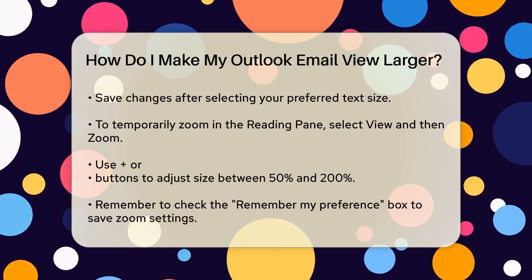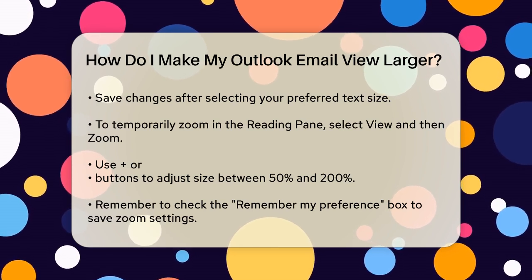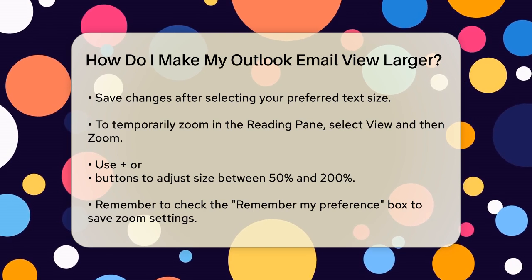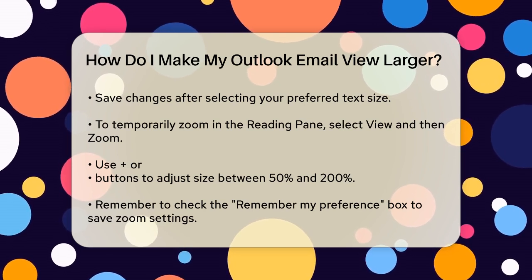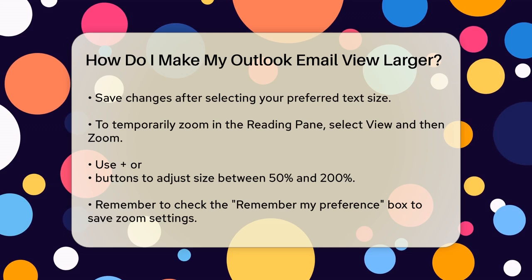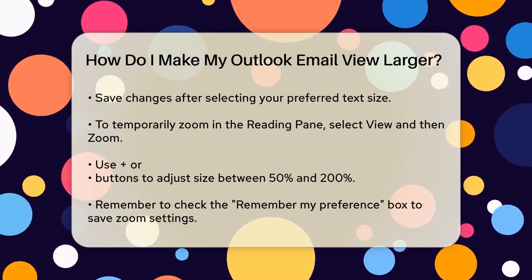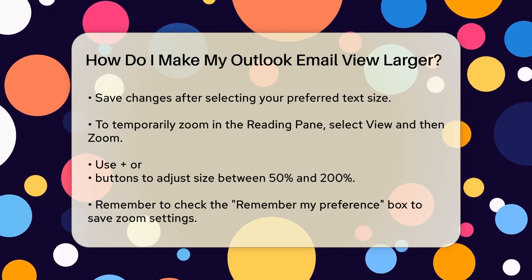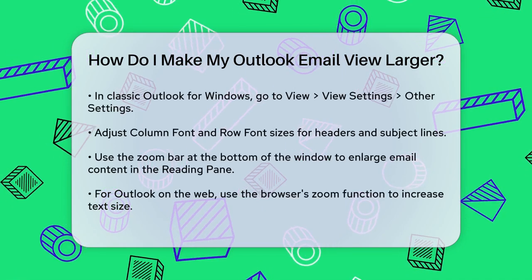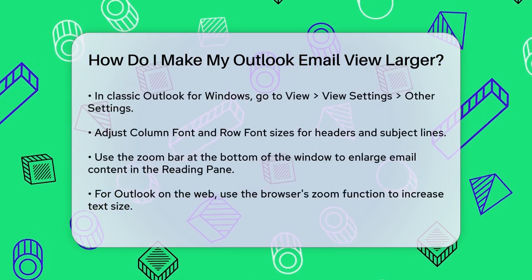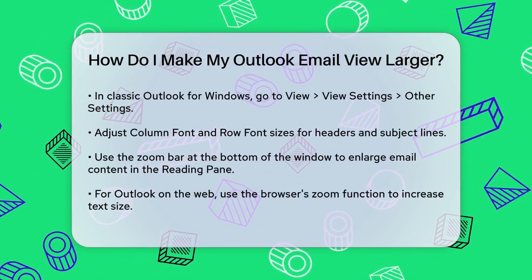If you're using the classic Outlook for Windows, the process is a bit different. To change the font size for column headers and subject lines, go to View, View Settings, Other Settings. Here, you can adjust the column font and row font to your desired size. For enlarging the email content in the Reading pane, click on the message you want to preview and then use the Zoom bar at the bottom of the Outlook window to adjust the size.